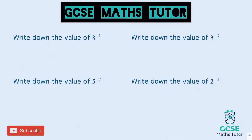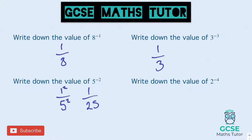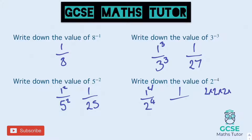Eight to the power of minus one — flip that over: one over eight. The one in the power doesn't affect these numbers, so it just stays as one over eight. Five to the power of minus two — flip the five over, becomes one over five. We square both and we get one over 25. Three to the power of minus three — flip that over: one over three. The power is three, so we do both to the power of three: one, and three times three times three is 27, giving one over 27. Two to the power of negative four — flip that over: one over two. Both to the power of four: one to the power of four is one, and two times two times two times two is 16. Final answer: one over 16.